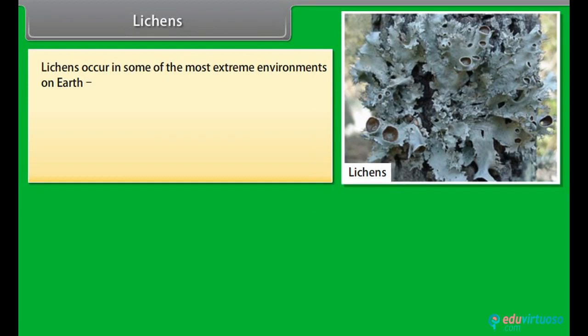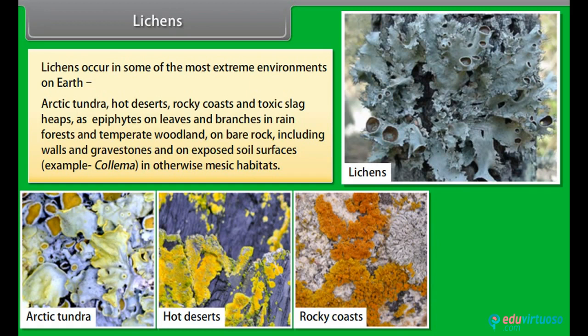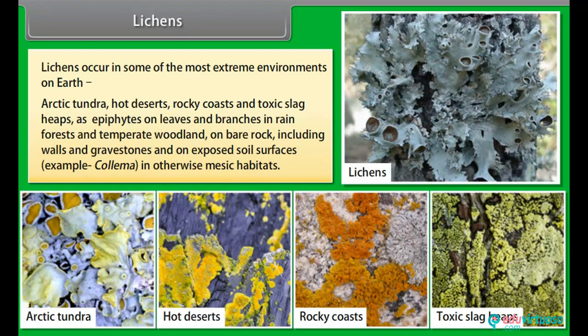Lichens occur in some of the most extreme environments on Earth — Arctic tundra, hot deserts, rocky coasts and toxic slag heaps — as epiphytes on leaves and branches in rainforests and temperate woodland, on bare rock including walls and gravestones, and on exposed soil surfaces. Lichens are of three types: crustose, fruticose, and foliose.